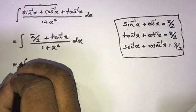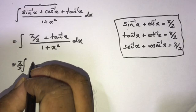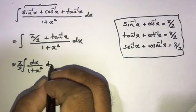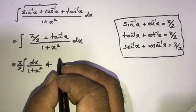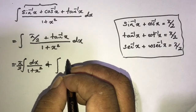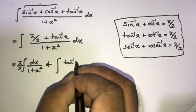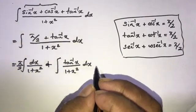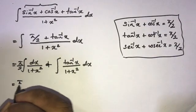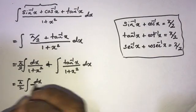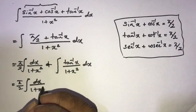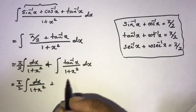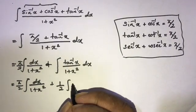We can write π over 2 times dx over 1 plus x squared, plus the integral of tan inverse x over 1 plus x squared. Now I will divide this integration by 2 and multiply by 2, so we can rewrite this accordingly.